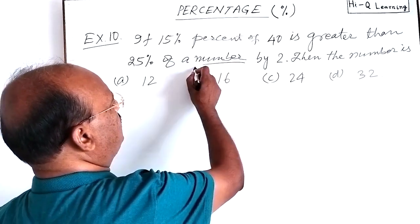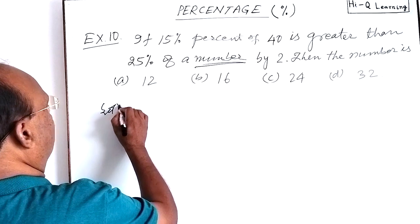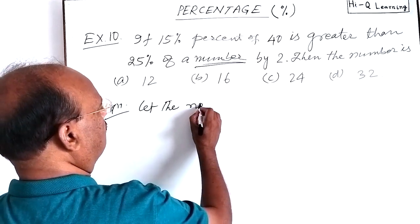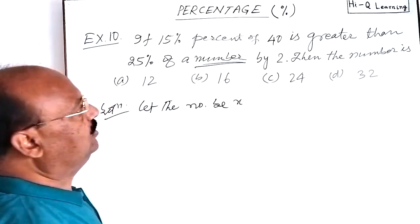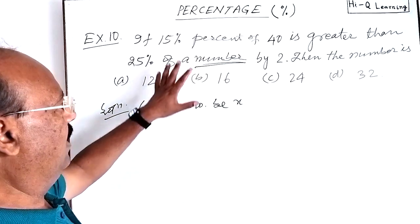First of all we suppose that this number is X. Let us see the solution here. Let the required number be X. According to the question, 15% of 40 we have to calculate.